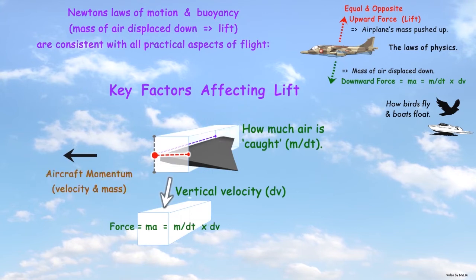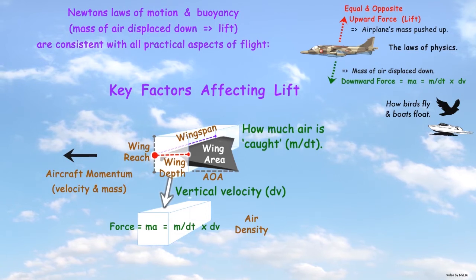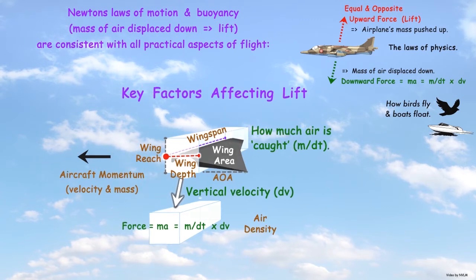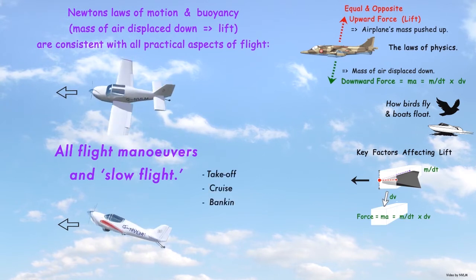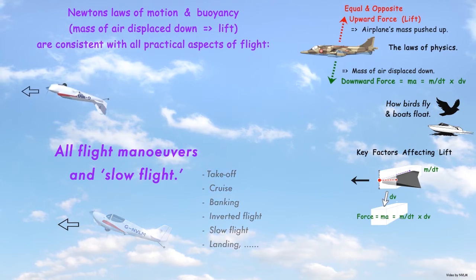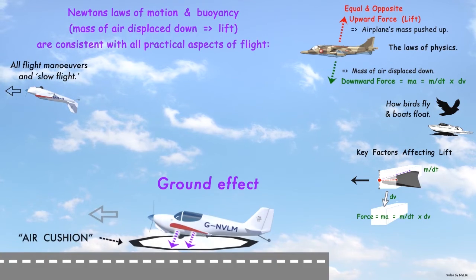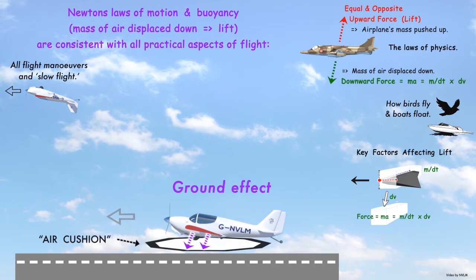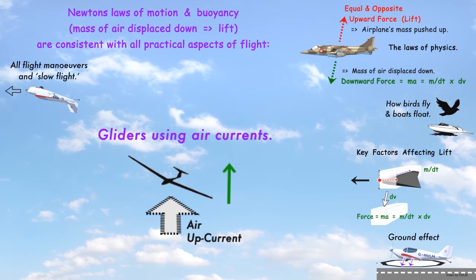Buoyancy is consistent with lift being due to how much air is caught by the wings and the vertical velocity downwards that air is accelerated to. This applies to all flight manoeuvres and slow flight, ground effect, and gliders using air currents to gain altitude.